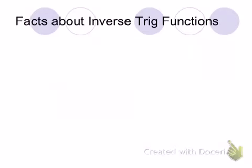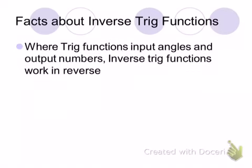Here are some facts about inverse trig functions, and this ties into what you were saying on the last test — understanding what I'm looking at. On an identity, if we're talking about y equals the sine of x, or y equals the inverse sine of x, what are the x and y? It's important to know: in a trig function, the input is angles and the output is numbers. Inverse trig functions work in reverse — they input numbers and output angles.